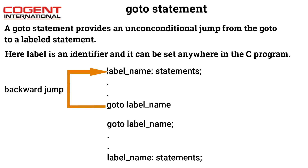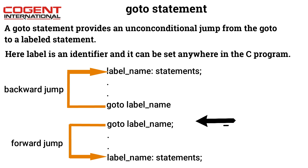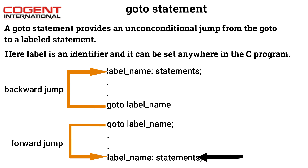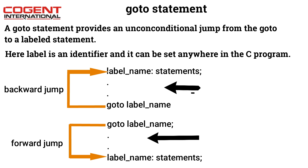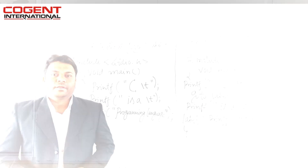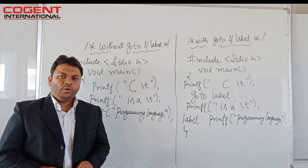If the label is set below the goto, it is called a forward jump. The syntax is: goto label_name, then the label_name with the statements, then goto label_name. The first example indicates a forward jump and the second one is a backward jump.